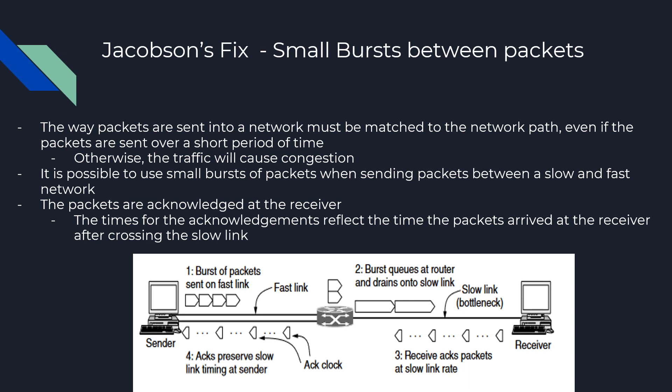After knowing what Jacobsen's fix was, we can dive in and talk about how he implemented it. Jacobsen's fix was to send small bursts between packets. The way packets are sent into a network must be matched to the network path, even if the packets are sent over a short period of time. Otherwise, the traffic between the networks will cause congestion. It's possible to use small bursts of packets when sending between a slow and fast network. The packets are acknowledged at the receiver, and the times for the acknowledgements reflect the time the packets arrived at the receiver after crossing the slow link.